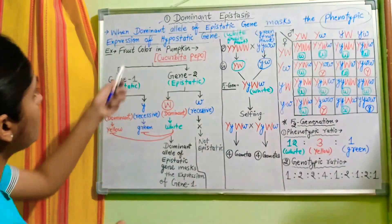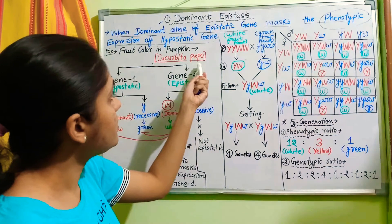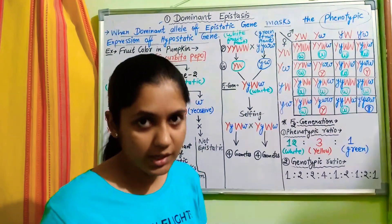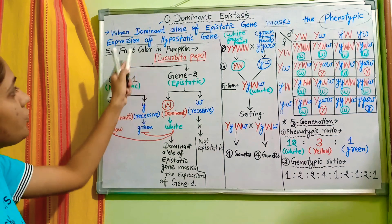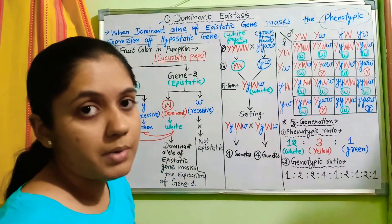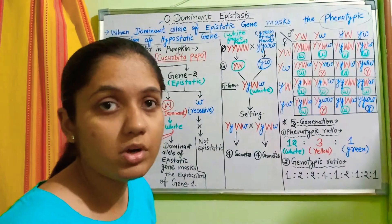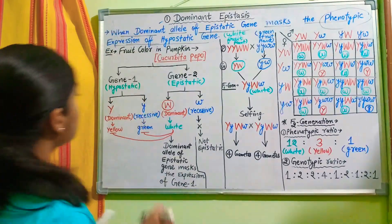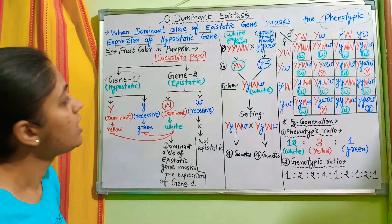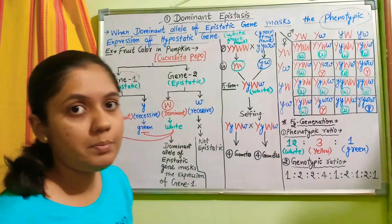The cross demonstrating dominant epistasis is done using fruit coloring in pumpkin. The botanical name of this pumpkin is Cucurbita pepo, belonging to the family Cucurbitaceae. The fruit color character is controlled by two genes: gene one is the hypostatic gene and gene two is the epistatic gene.